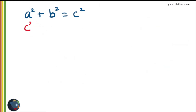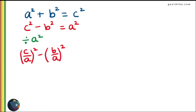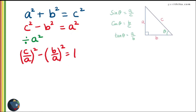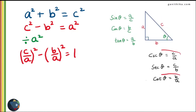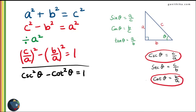Next, make A squared the subject from the Pythagoras equation and divide by A squared on both sides. We get (C/A)² - (B/A)² = 1. Since C over A is cosecant theta and B over A is cot theta, the identity is csc²θ - cot²θ = 1.